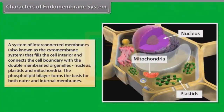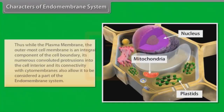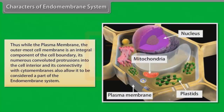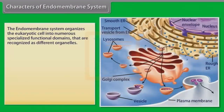The endomembrane system is a system of interconnected membranes, also known as the cytomembrane system, that fills the cell interior and connects the cell boundary with the double-membrane organelles — nucleus, plastids and mitochondria. The phospholipid bilayer forms the basis for both outer and internal membranes. While the plasma membrane is an integral component of the cell boundary, its numerous convoluted protrusions into the cell interior and its connectivity with the cytomembranes also allow it to be considered a part of the endomembrane system. The endomembrane system organizes the eukaryotic cell into numerous specialized functional domains recognized as different organelles.